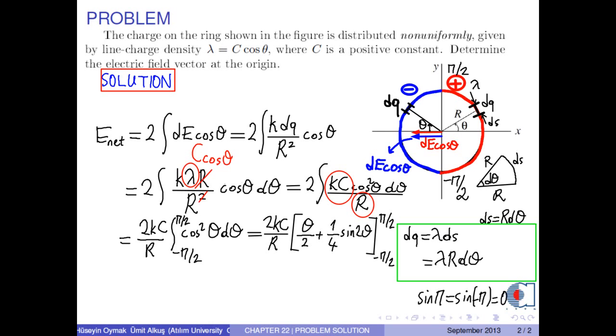We know that sine pi and sine negative pi are 0. So, we are left with k times c over r times pi over 2 minus negative pi over 2, which is total pi.